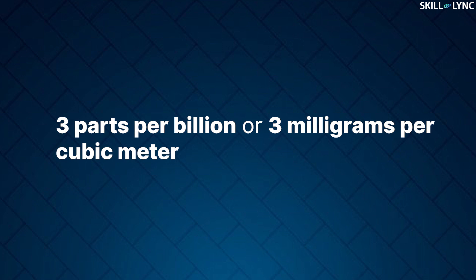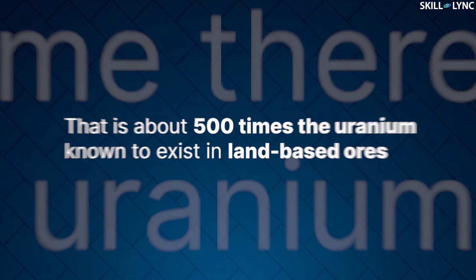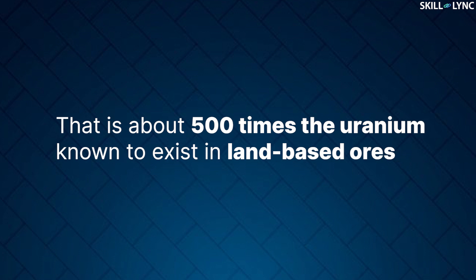The concentration of uranium in seawater is about 3 parts per billion or 3 milligrams per cubic meter. Taking the total volume of the ocean into account, it turns out that at any given time there are at least 4 billion tons of uranium in seawater. That is about 500 times the uranium known to exist in land-based ores.